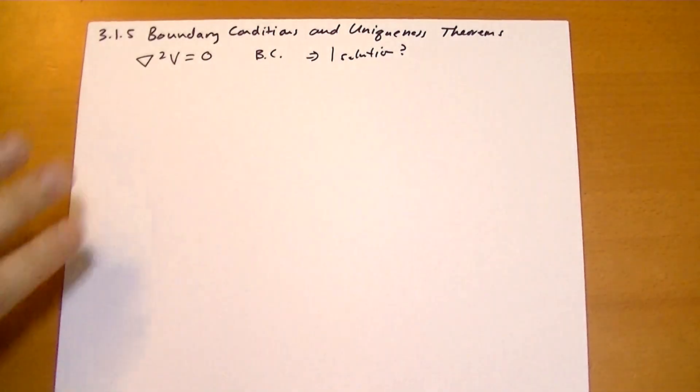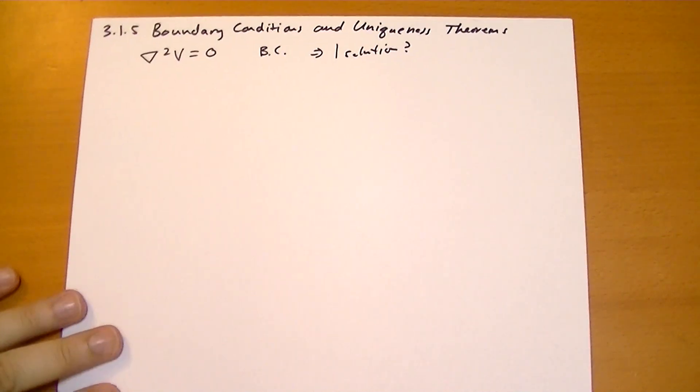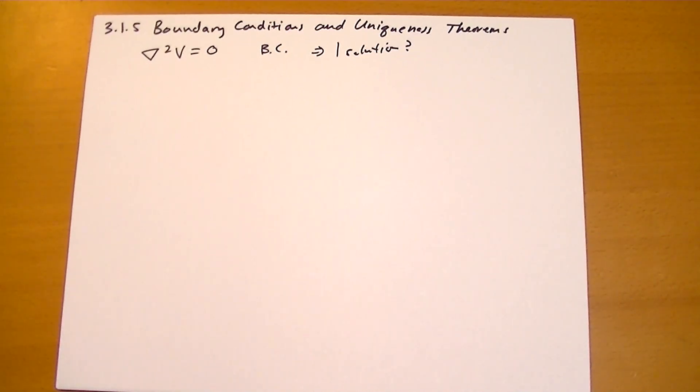If you have too few boundary conditions, you might get many solutions that would possibly work. If you have too many boundary conditions, there might not be any solution at all that satisfies all of them. So the question is, how much is enough?